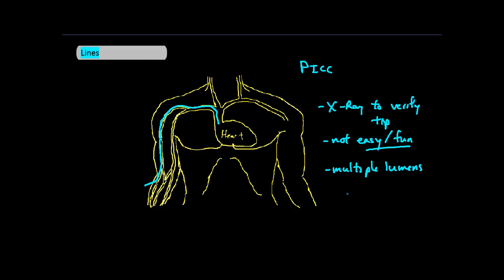Now with the PICC lines, these are typically used when you need IV access over a long period of time. So for example, you'll see these used for long chemotherapy regimens, extended antibiotic therapy, or TPN.